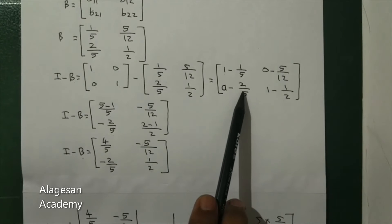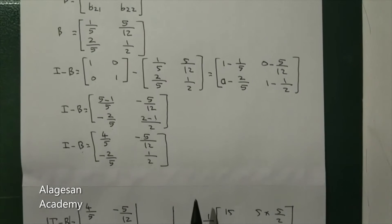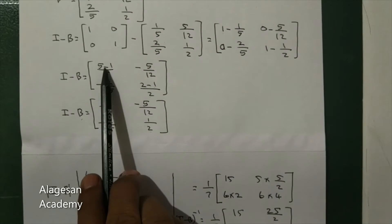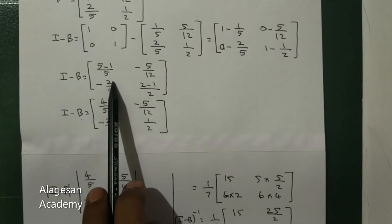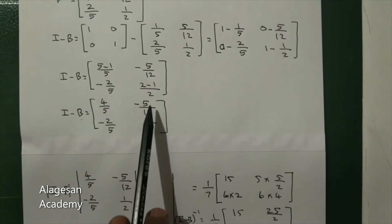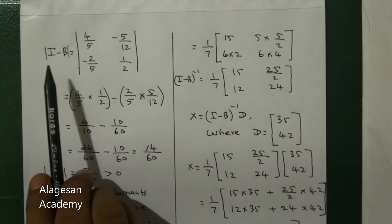Next, determinant of I minus B: we calculate (4/5)(1/2) minus (minus 5/12)(minus 2/5), which equals 4/10 minus 10/60.